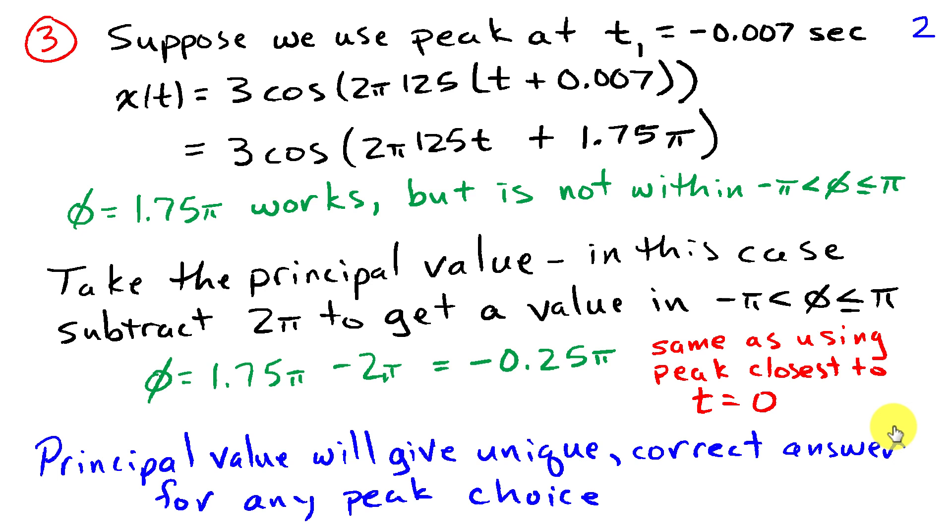So it turns out that you can choose any peak in the sinusoid for the time shift that you like. You may not get a phase within the interval minus pi to pi, unless you choose the peak which is closest to t equals 0. But you can take the principal value of that phase and that will give you the unique answer in this interval.